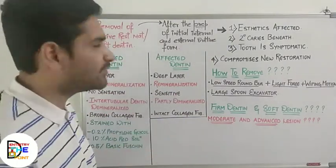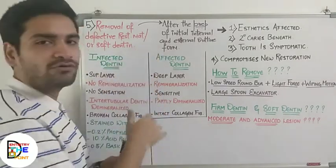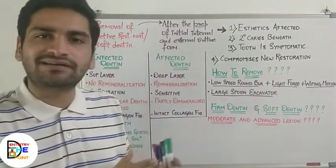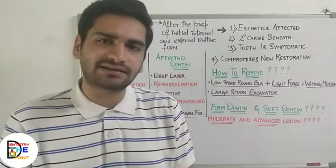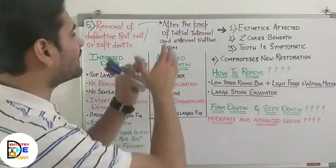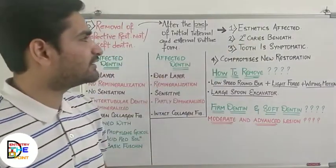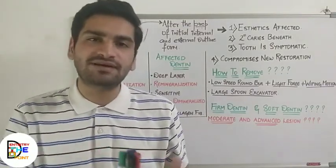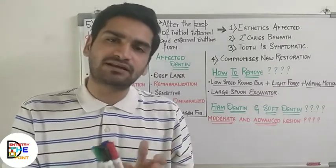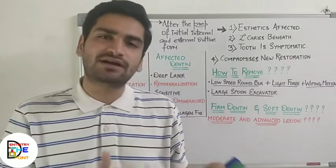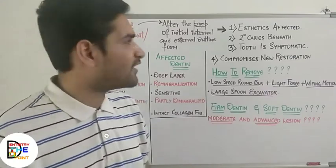These are the nine steps of cavity preparation. The 5th step — removal of defective restorative material or soft or infected dentine — is done after the initial preparation of internal and external outline. Why is it necessary? First, aesthetics of the new restorative material will be affected. For example, if there is old silver amalgam and you are restoring with composite, the old amalgam will affect the aesthetics of the new material.